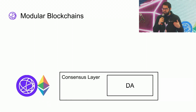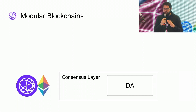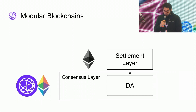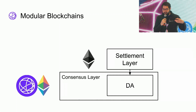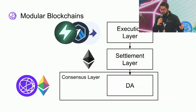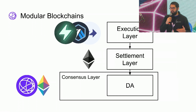In the modular paradigm, the base consensus layer only does data availability — it makes the transaction data available but doesn't execute it. On top of this you have a settlement layer, for example Ethereum's Ethereum Virtual Machine, and in some models these two are tied together.